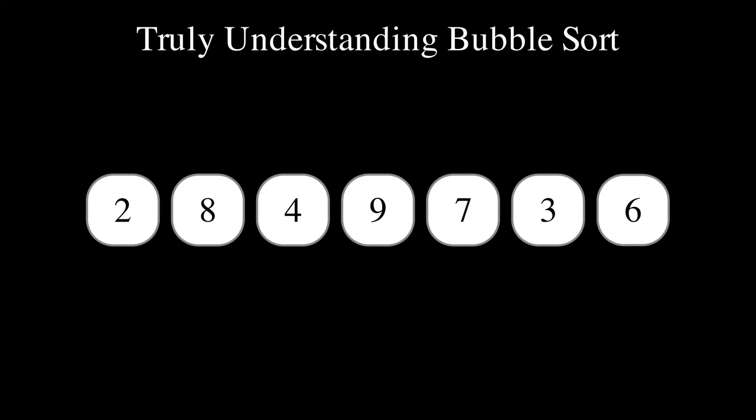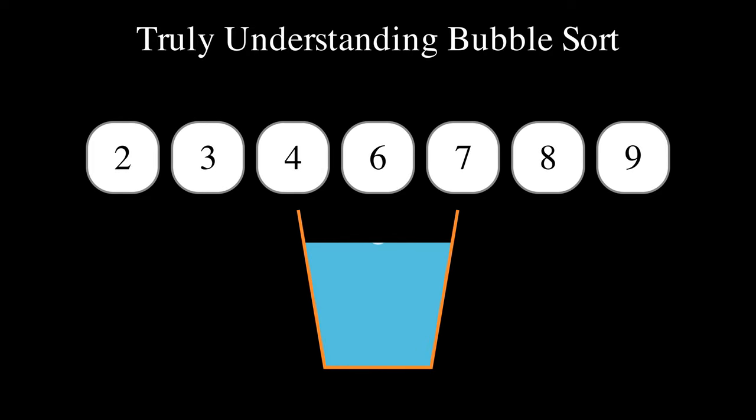Bubble sort is a sorting algorithm. It takes an array with its elements in arbitrary order and permutes them such that the elements end up in increasing order of values. They say bubble sort is a little bit like air bubbles popping out of a glass of water, hence the name bubble sort, but frankly I do not see the resemblance. Let me know in the comments below if you can.